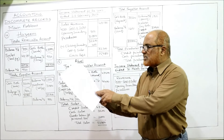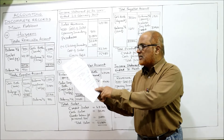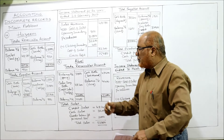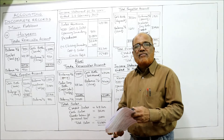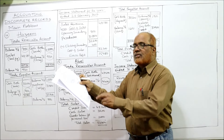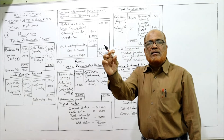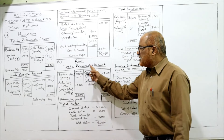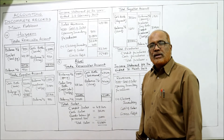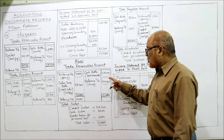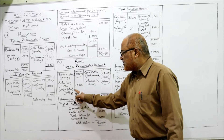Trade receivables account for Abel: opening balance 3,800 (debit side, 31st March 2018); closing balance 4,400 (credit side, 31st March 2019). Cash received from credit customers 47,600 goes on the credit side. Balancing: 47,600 plus 4,400 equals 52,000, minus 3,800 equals 48,200 — these are the credit sales.